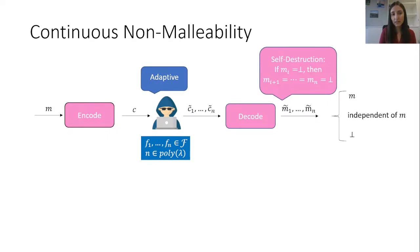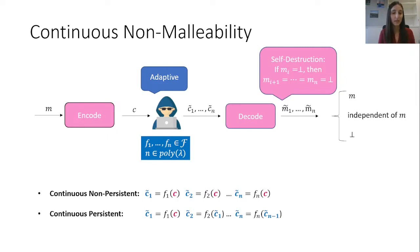When considering continuous non-malleability, we have two variants. The first is non-persistent tampering. Here, every tampering function is always applied to the original codeword.